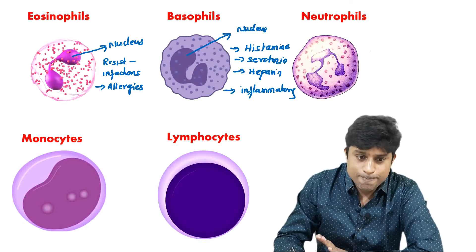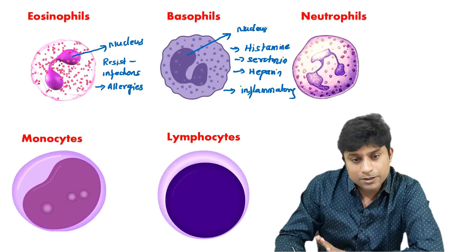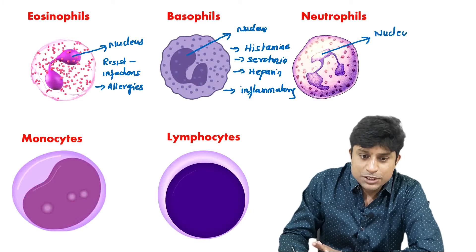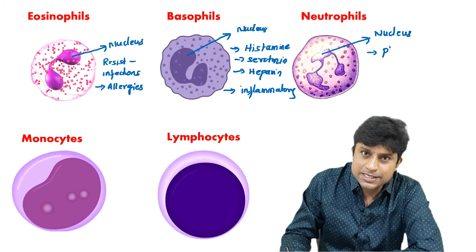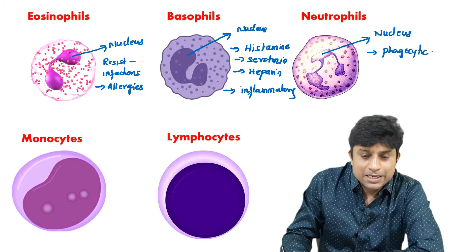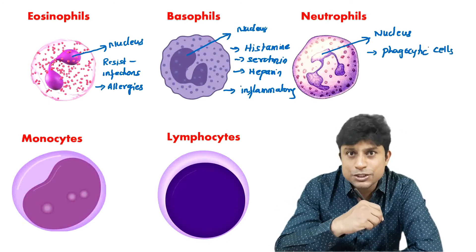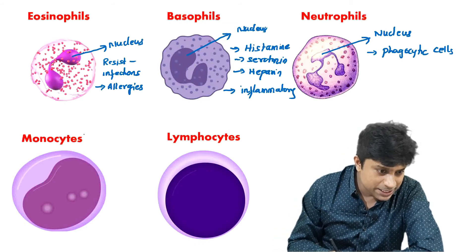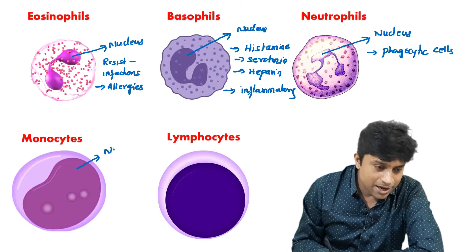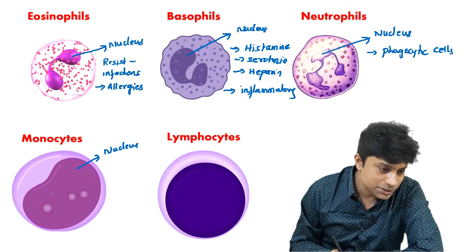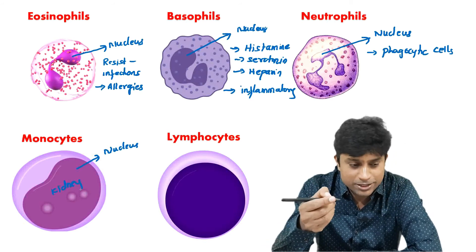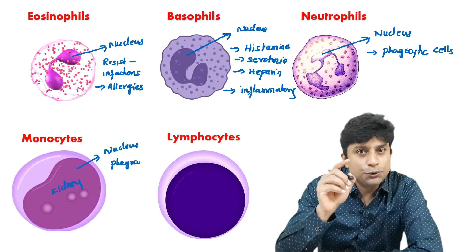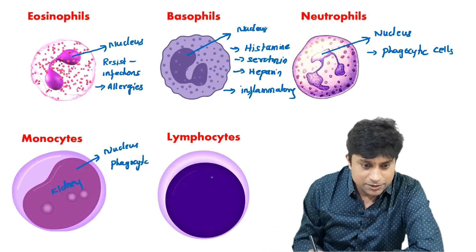Neutrophils are the most abundant WBC in the blood. The nucleus of neutrophils is three to five lobed. Neutrophils are phagocytic cells — any foreign microorganism entering the body is destroyed by neutrophils. Monocytes have a single large kidney-shaped nucleus and are also phagocytic cells.